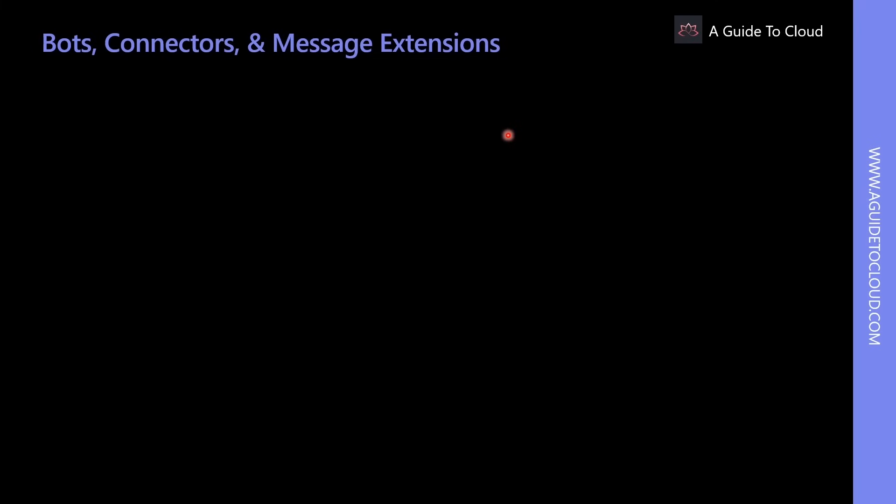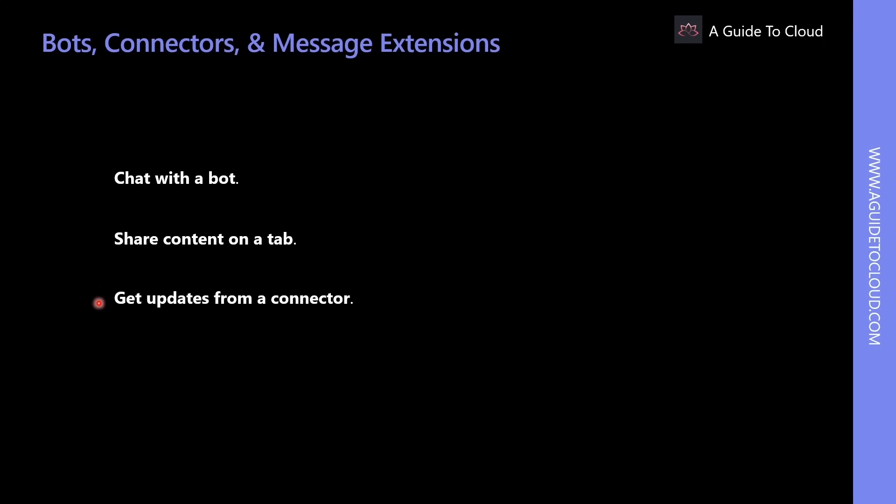Let's look at how users can interact with apps in Teams. First, Chat with a Bot — bots provide answers, updates, and assistance in a channel, and users can chat with them one-on-one or in a channel for task management and scheduling. Second, sharing content on a tab — tabs help users share content and functionality from services in a channel, connecting Microsoft services like Excel or SharePoint, and other services like YouTube or Zendesk. Third, getting updates from a connector — connectors send updates and information directly to a channel from services such as Trello, Jira, Twitter, RSS feeds, and GitHub.